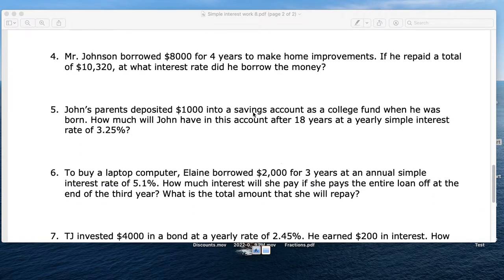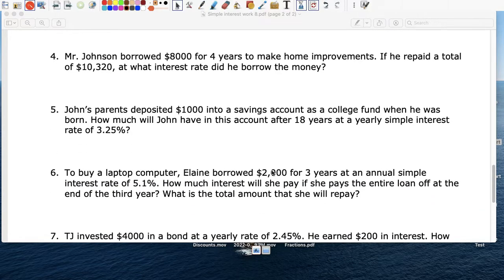Number 4, Mr. Johnson borrowed $8,000 for four years. He repaid $10,320, which is the interest rate that he was charged, or what was the percent? So I equals PRT, so you've got to be very careful with this. So principal is $8,000. R is what we don't know.